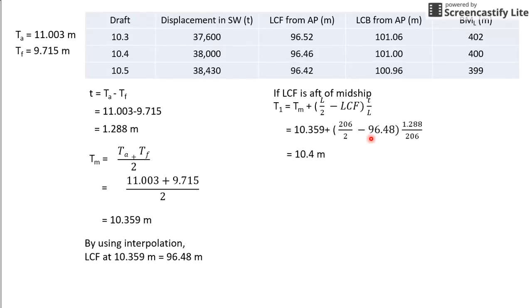T_1 is the draft read at your hydrostatic LCF. Since 10.4 meters is in the table itself, you just read the corresponding values for your displacement.